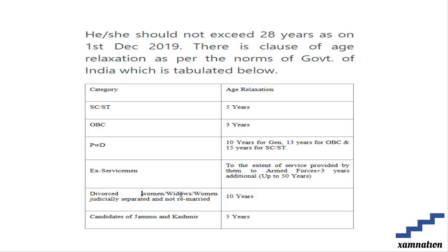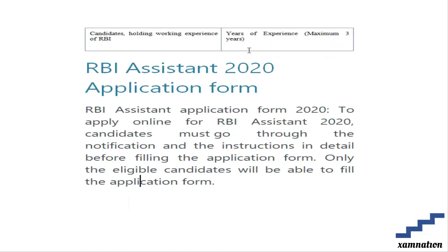For divorced women, widows, or women judicially separated and not remarried, the age relaxation is 10 years. For candidates from Jammu and Kashmir, the age relaxation is 5 years. Candidates with prior working experience at RBI get an age relaxation equal to their years of experience, up to a maximum of 3 years.